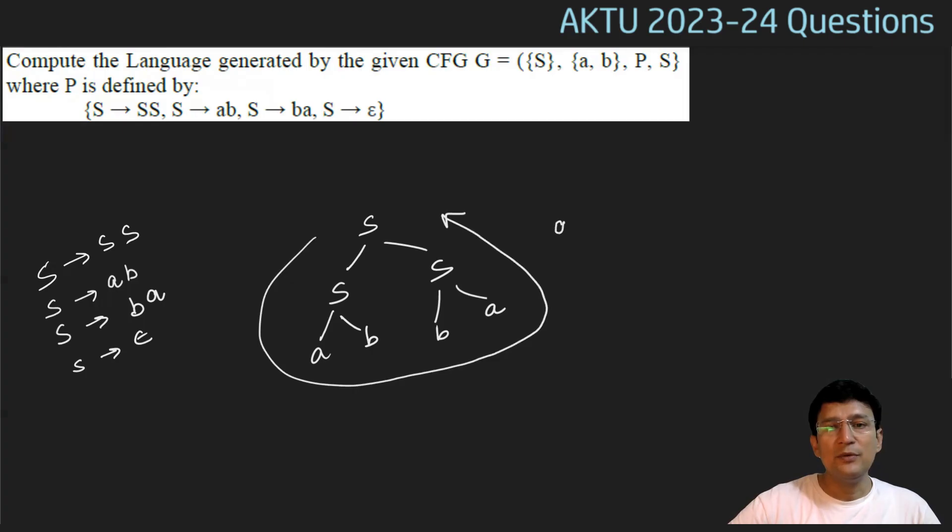It means the number of A's in this string is equal to the number of B's. Similarly, if we do one more derivation, S produces SS. From the first S we derive BA, and from the second S we derive AB. So, this is BAAB. This is also telling you the number of A's is equal to number of B's.